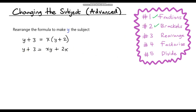We've expanded all the brackets — there are no more brackets left. Now we need to rearrange, getting all of the y's on one side. I'm going to get them on the left hand side, so I need to get rid of this xy term. I'll subtract xy from both sides. On the left hand side we've got y minus xy plus 3, and on the right hand side these two terms cancel so we're just left with 2x.